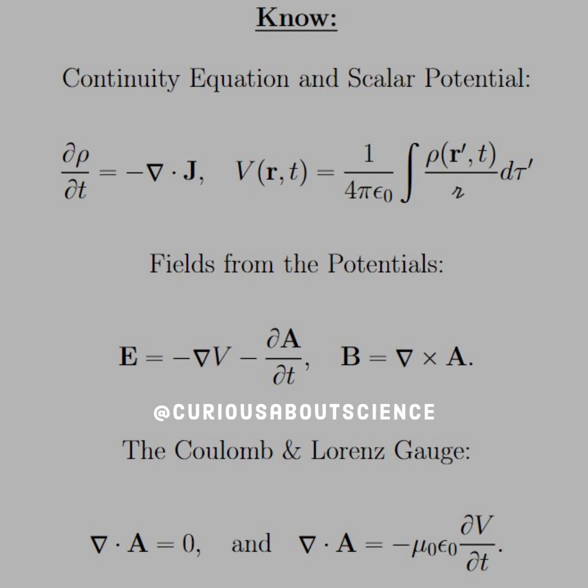The scalar potential V is equal to 1 over 4πε₀ integrated over the prime coordinates or the source coordinates for where ρ is and the script R, of course. We know what the fields from the potentials are. We spent the first few questions on them. And the Coulomb and Lorentz gauge, we just spent the last two on them. So let's go ahead and dive into part A.